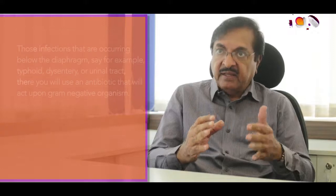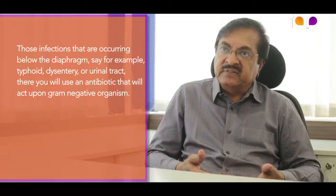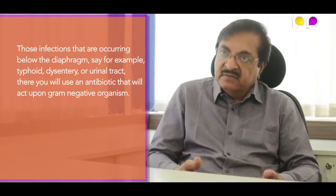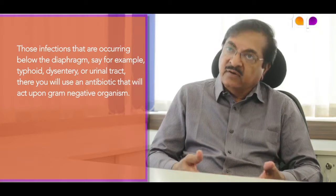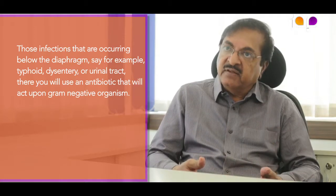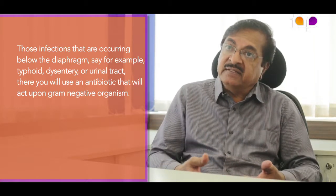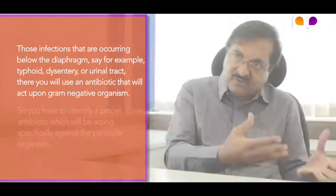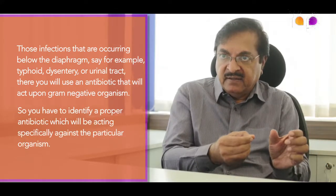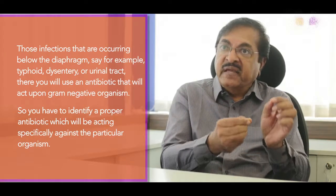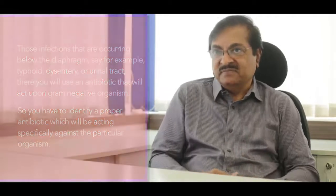Infections occurring below the diaphragm — such as typhoid, dysentery, or urinary tract infection — require an antibiotic with action against gram-negative organisms. So you have to identify a proper antibiotic acting specifically against the particular organism causing the infection.